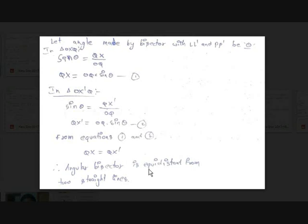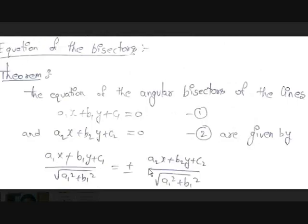Now let's go to our main theorem: the equation of the bisectors. The equations of the angular bisectors of the straight lines A₁X + B₁Y + C₁ = 0 (equation 1) and A₂X + B₂Y + C₂ = 0 (equation 2) are given by: (A₁X + B₁Y + C₁) / √(A₁² + B₁²) = ±(A₂X + B₂Y + C₂) / √(A₂² + B₂²).